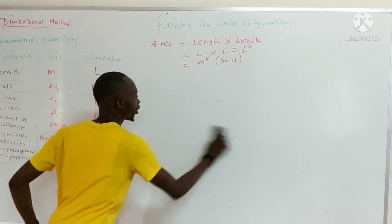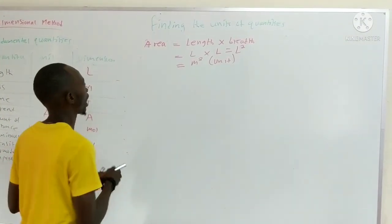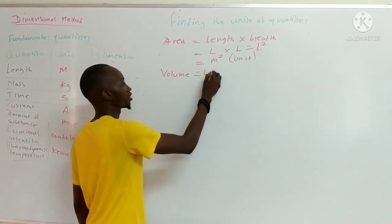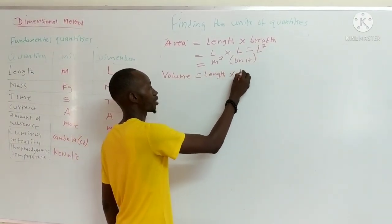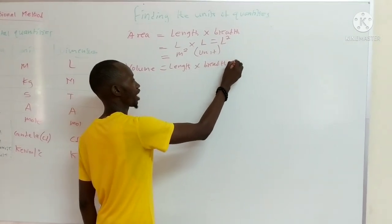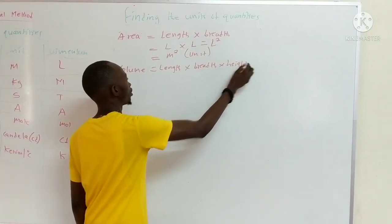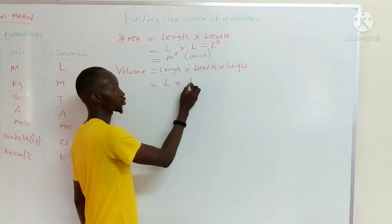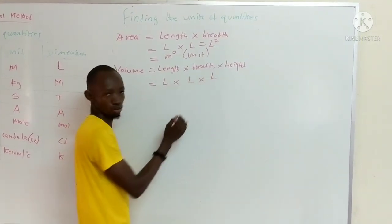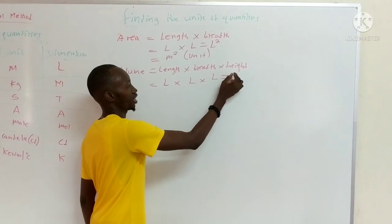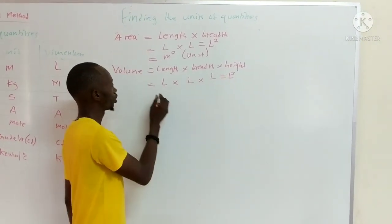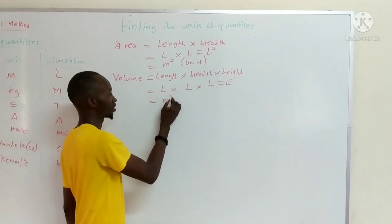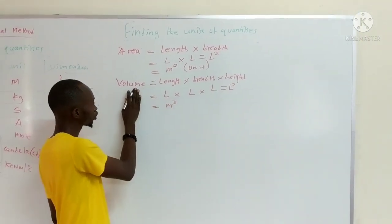If we move further, we take the three-dimensional quantity, which is volume. Volume is length times breadth times height. So the dimension of length is L, breadth is also L, and height is also L. This gives us L cubed. The unit of length is metres, so the unit of volume is metres cubed (m³). This is how dimension helps us to find the unit of quantities.